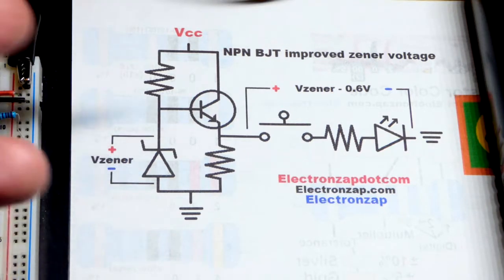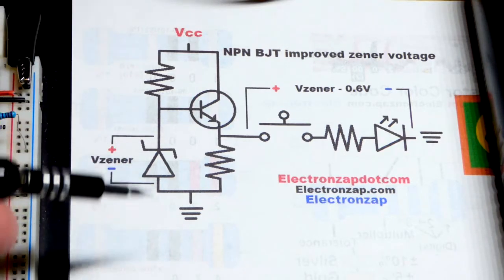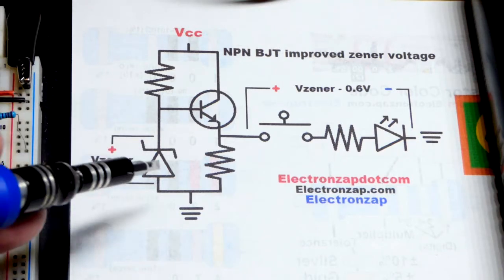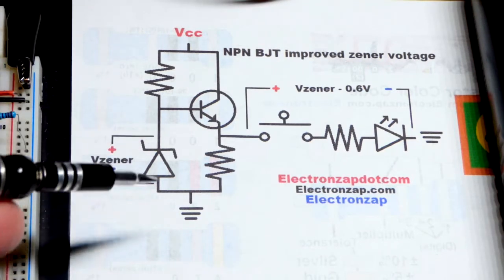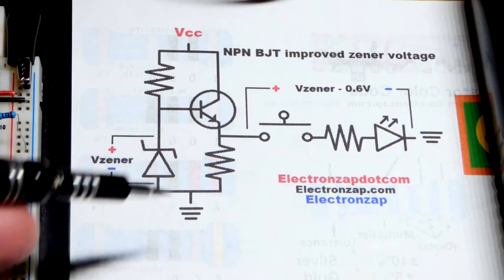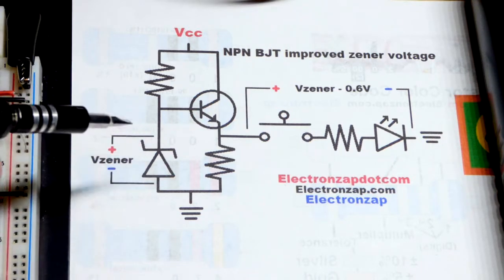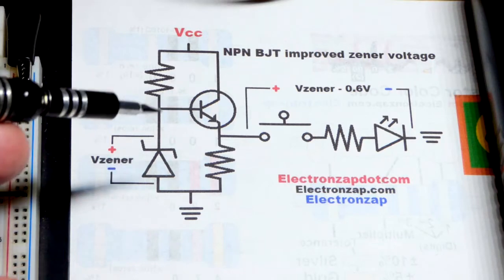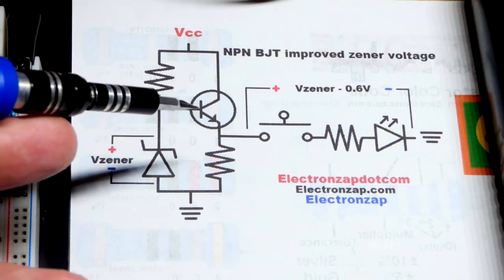The Zener diode, when current is going through it, builds up its Zener voltage. You select it by the Zener voltage you want and it shifts slightly depending on how much current is going through it. As long as current is going through there, it's close to its Zener voltage. I'm using a 5.1 volt Zener diode.